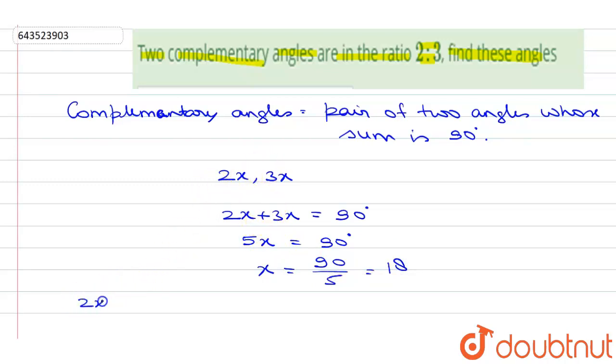Now for finding the value of each angle: first angle is 2x, which means 2 into 18, which equals 36 degrees. And the second angle is 3x, which is equal to 3 into 18, so 18 three times is 54 degrees. So the two complementary angles whose ratio is 2 is to 3 are 36 degrees and 54 degrees. I hope this answered your question.